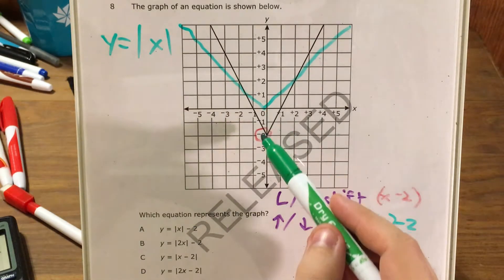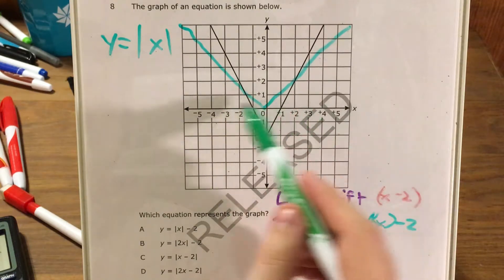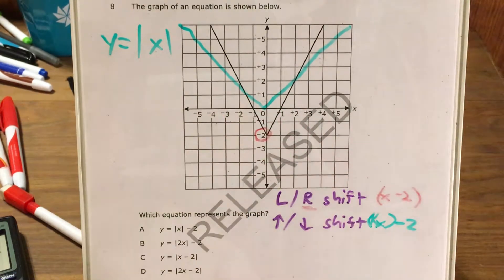Now this is clearly an up or down shift. We haven't taken this graph and moved it left or right, we've moved it down two units, which means that I should be looking not for one of the answer choices where the minus 2 is inside the absolute value bars, but one of the answer choices where the minus 2 is outside.